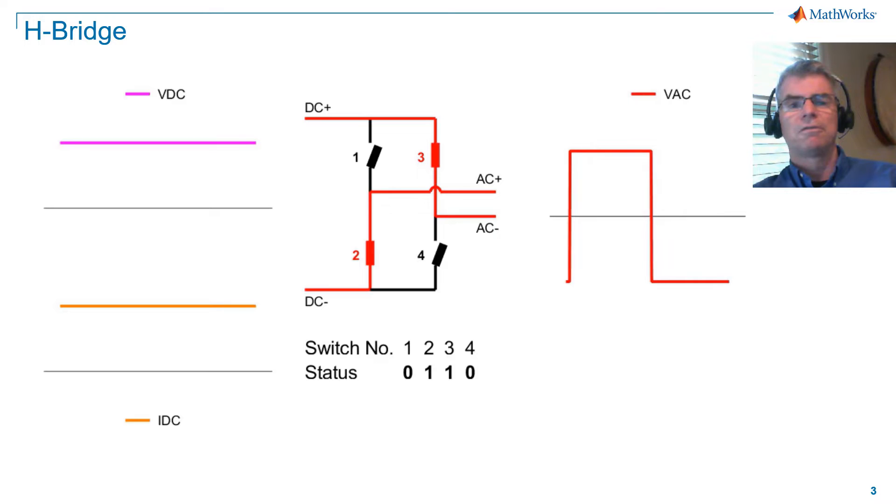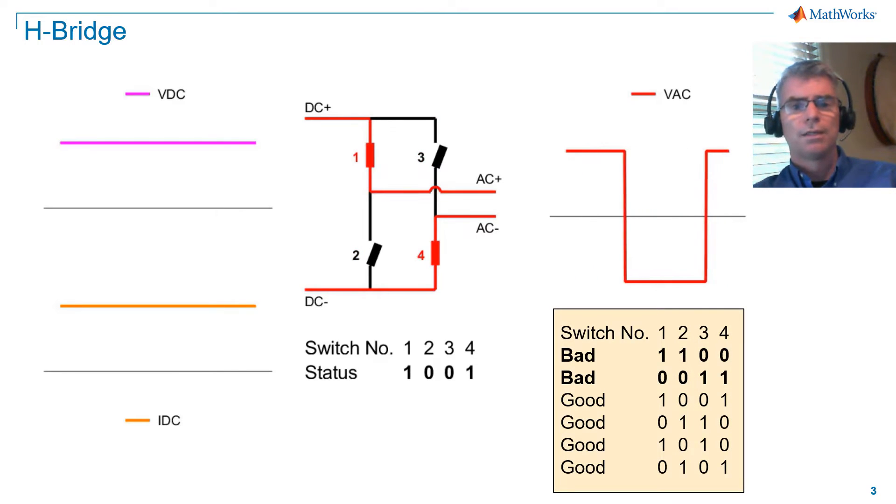This is a good place to talk about forbidden switching states. It's a bad idea to turn on switches 1 and 2 at the same time, or switches 3 and 4 at the same time. If we do that, we short circuit our supply. However, we do have two additional switching sequences at our disposal that do not cause problems, and can in fact benefit operation.